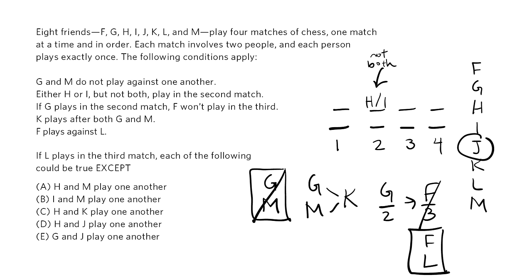In addition to notating the rules, I always want to do two other things during the setup. One, look for inferences, the things that we figure out by bringing the rules together. Some games have big, up-front inferences that are essential for us to uncover, and others, like this one, don't. In this case, probably the most interesting inferences are that G and M can't play in the fourth game, and K can't play in the first or second. You can notate those, but it's not essential.